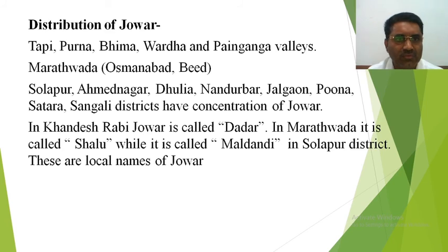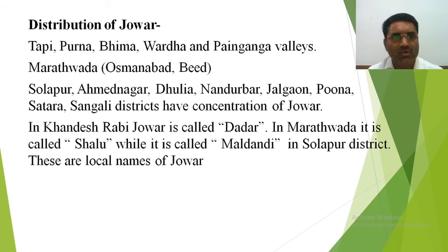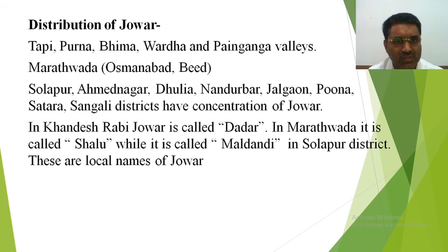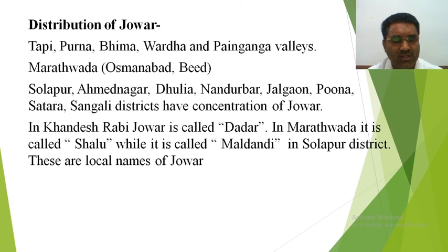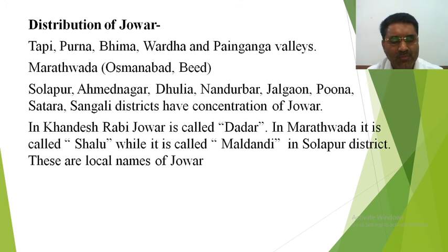Regarding the distribution of jowar, the important river valleys are Tapi, Purna, Bhima, Wardha, and Penganga. In Marathwada, Osmanabad and Beed districts are important jowar-growing areas. Other key districts include Solapur, Ahmadnagar, Dhule, Nandurbar, Jalgaon, Pune, Satara, and Sangli, which all have significant concentrations of jowar cultivation.